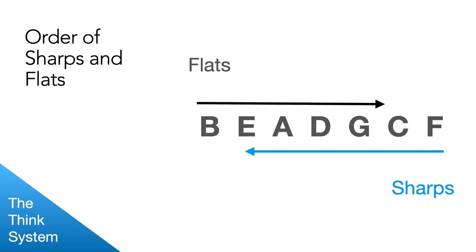And then the order of sharps is exactly the opposite. So if you have one sharp, it is always F sharp. If you have two sharps, it is F sharp and then C sharp. If you have three sharps, their order is always F sharp, C sharp, and G sharp and so on.